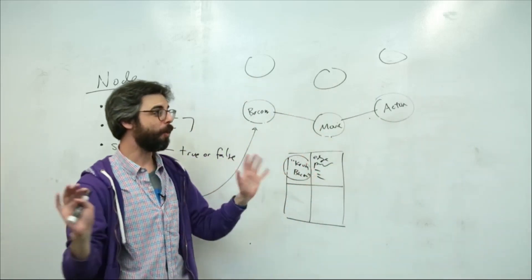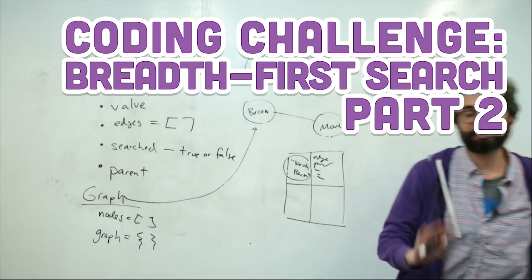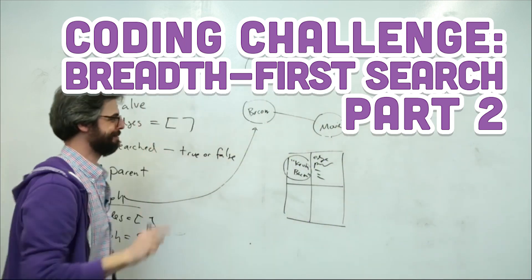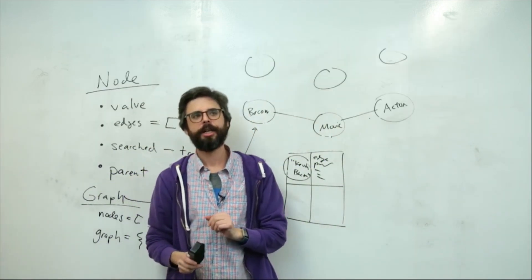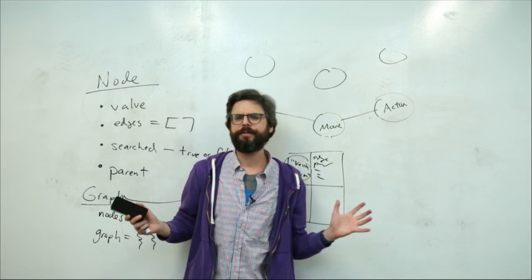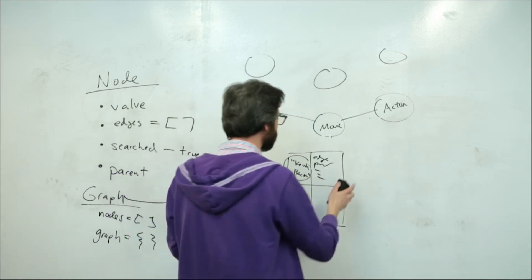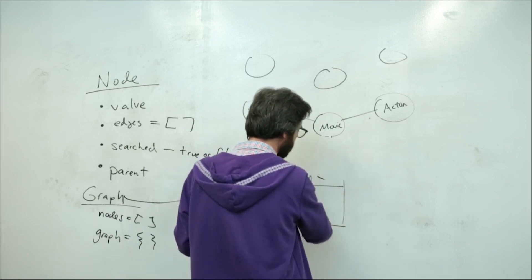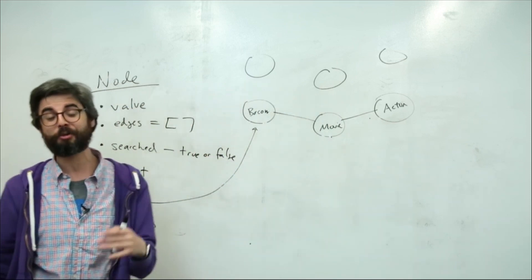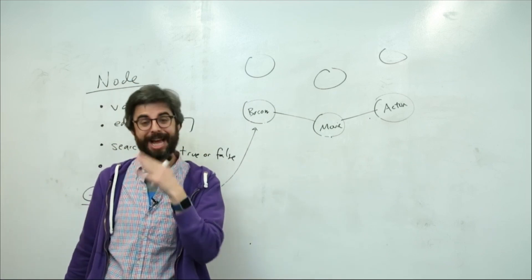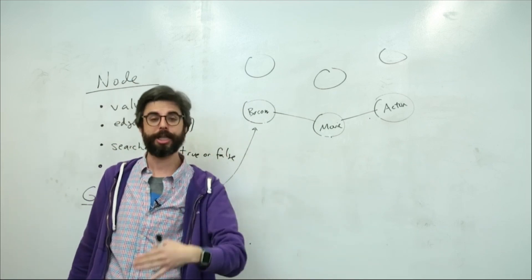I'm back here for part two of this breadth-first search algorithm. Somebody in the chat had asked, this is really hard to follow, could you visualize this? That's a very good point. Unfortunately, the way I'm building this example right now, I'm not going to build in a lot of graphics features, so that's a great exercise for you to do. I do have other examples with those features that I'll link to.